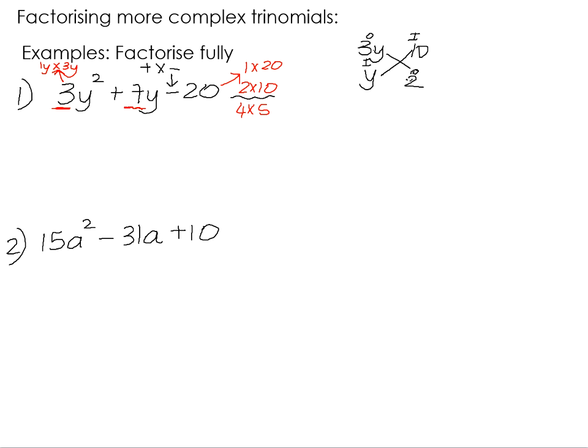So, 3y times 2, we'll come back and look at the signs in a second, is 6y. And y times 10 is 10y. Now, if you think about 10 and 6, if one has to be positive and one has to be negative, they will never have a difference of 7. If you have positive 10y minus 6y, you get positive 4y. If you have negative 10 plus 6y, you get negative 4y. So, clearly, 2 and 10 are not going to combine to give us the positive 7 in the middle. So, we can discount that possible solution.